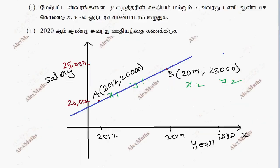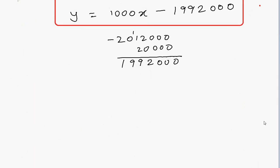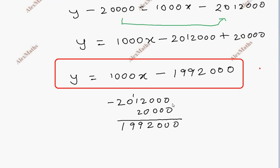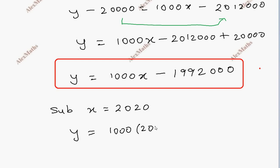The linear function is expressed in x and y. For the second part, find the salary in 2020. Substituting x equal to 2020: y equals 1000 into 2020 minus 1,992,000.